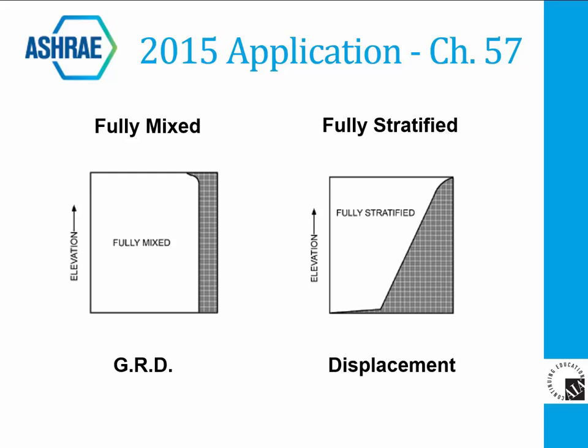As shown with the diagram on the left, space temperatures from the floor level to the return level have very little stratification. By design, displacement outlets are located near the floor with cool air introduced at low velocities, usually less than 100 feet per minute. Slight mixing occurs near the floor until heat sources in the space cause air to stratify, resulting in temperature increases in the space from the floor to the return height.